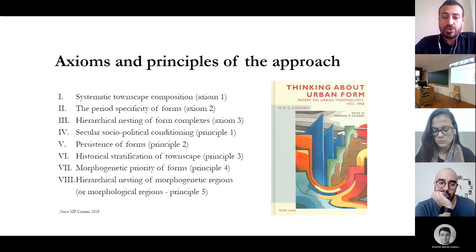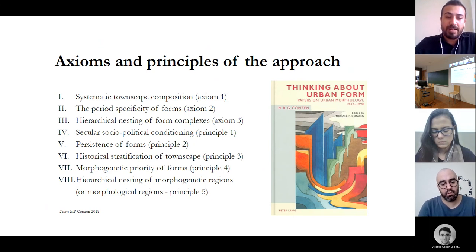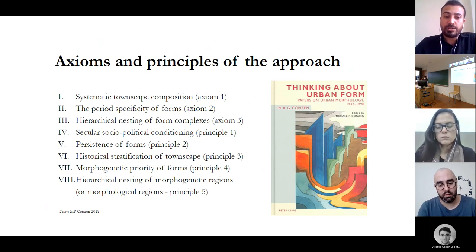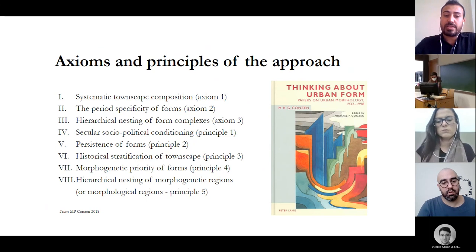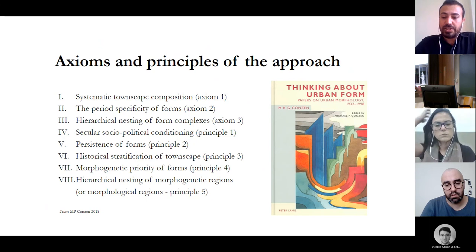The historical-geographical approach has serious axioms and principles. These are respectively: systematic townscape composition, period-specific forms, hierarchical nesting of form complexes, secular sociopolitical conditioning, persistence of forms, historical stratification of townscape, morphogenetic priority of forms, and hierarchical nesting of morphogenetic regions, or morphological regions.